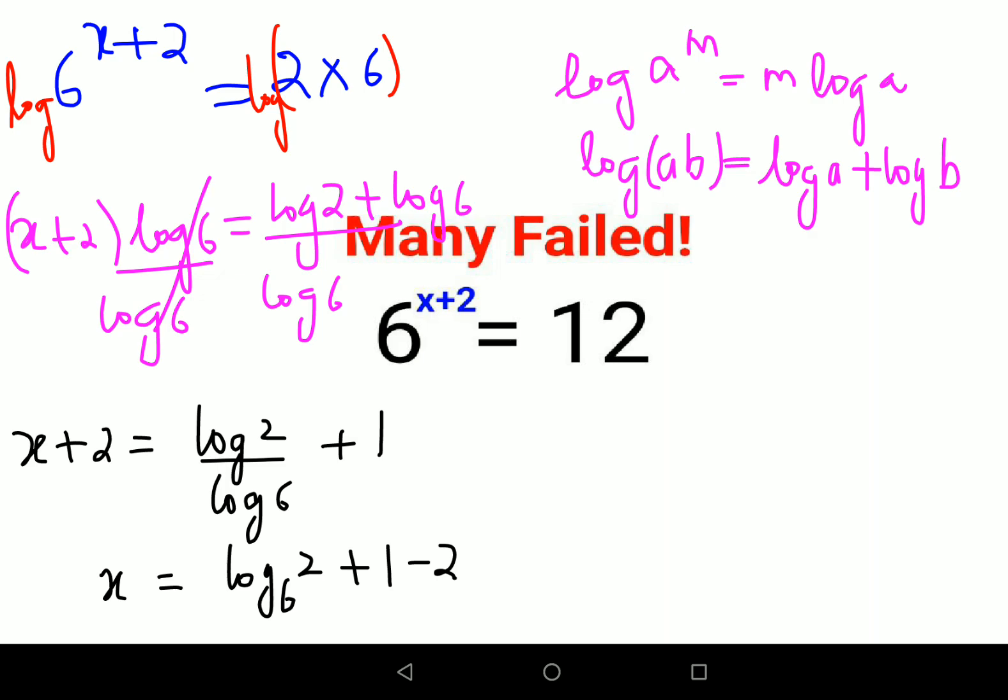This is something which a lot of people don't know: log of a upon log of b is nothing but log of a to the base b. This fraction can be represented this way. So here eventually we got x value as log 2 to the base 6 minus 1.